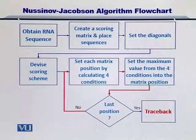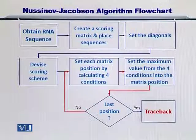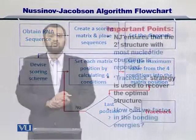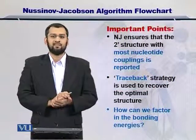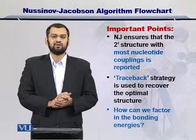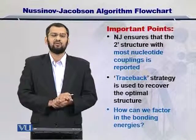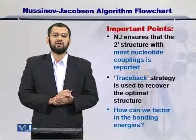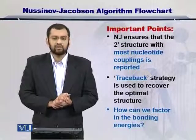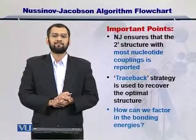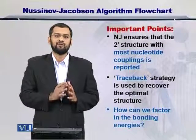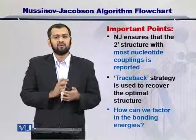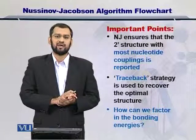Until that point, you continue filling up the matrix for all the possible matrix positions. The NJ algorithm ensures that there is a maximum coupling of the RNA nucleotides, which can help you to predict the secondary structure of the RNA molecule. Moreover, the traceback strategy is used to extract meaning out of the scores that you have put into the matrix. But then, what can be an optimal traceback strategy?